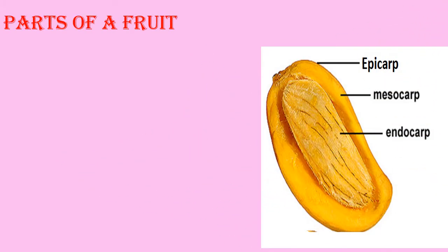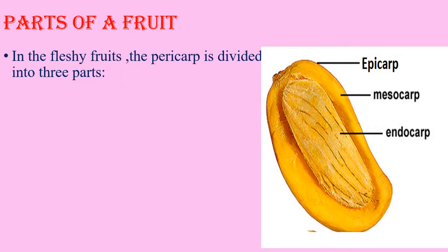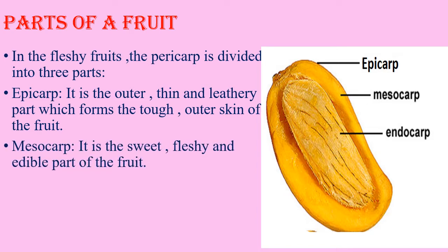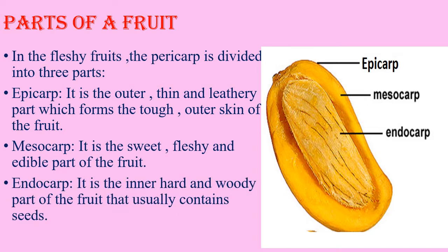Let us know about the parts of a fruit. In fleshy fruits, the pericarp is divided into three parts. Epicarp: it is the outer thin and leathery part which forms the tough outer skin of the fruit. Mesocarp: it is the sweet, fleshy and edible part of the fruit. Endocarp: it is the inner hard and woody part of the fruit that usually contains seeds.